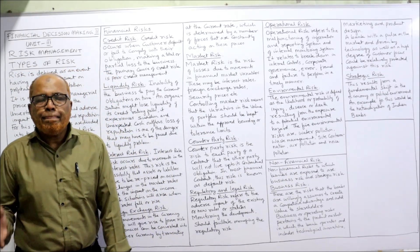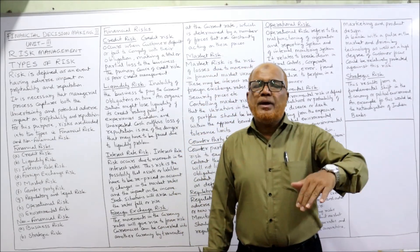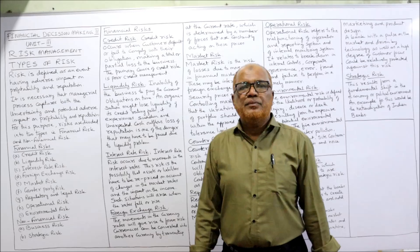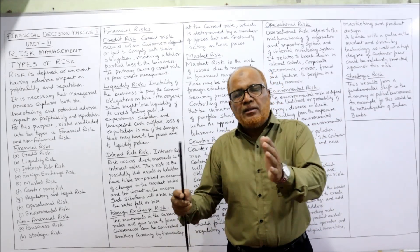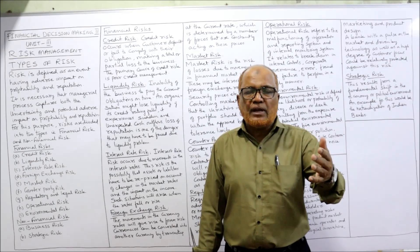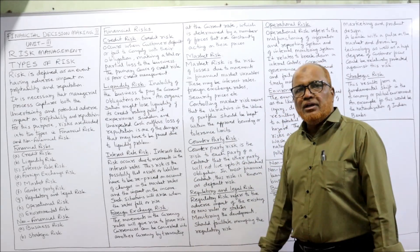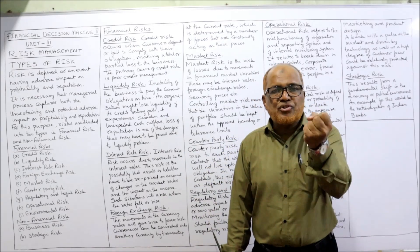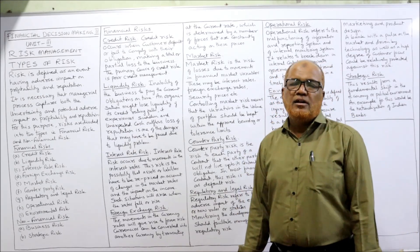The next risk is liquidity risk. The inability of the business to pay its obligations on time is called liquidity risk. The business has to make a number of payments from time to time — to suppliers, to employees as salaries, electricity bills, telephone bills, and other expenses. If the business is finding it unable to meet all these expenses on time, liquidity risk will arise. Sometimes unexpected cash outflow occurs, which creates a strain on the cash position. Whenever there is a strain on the cash position, liquidity risk will arise.